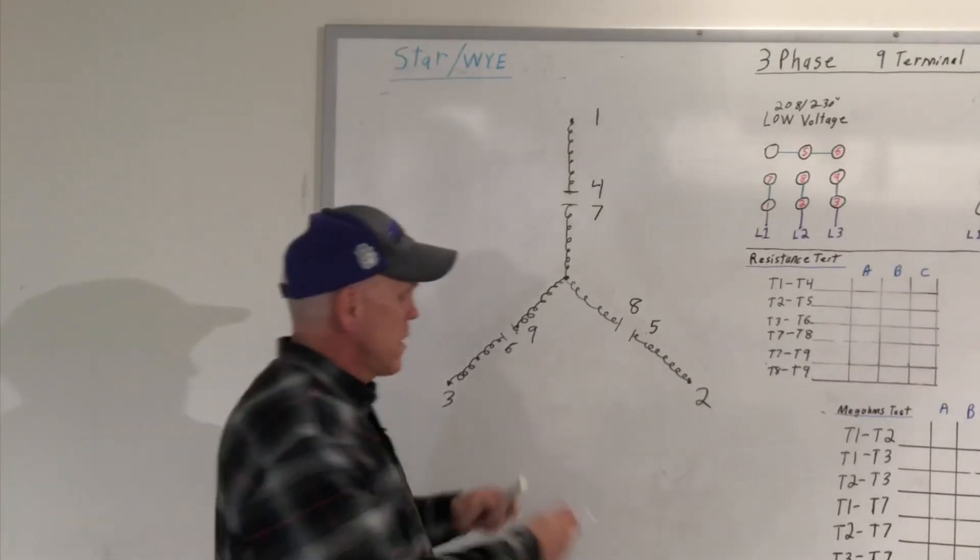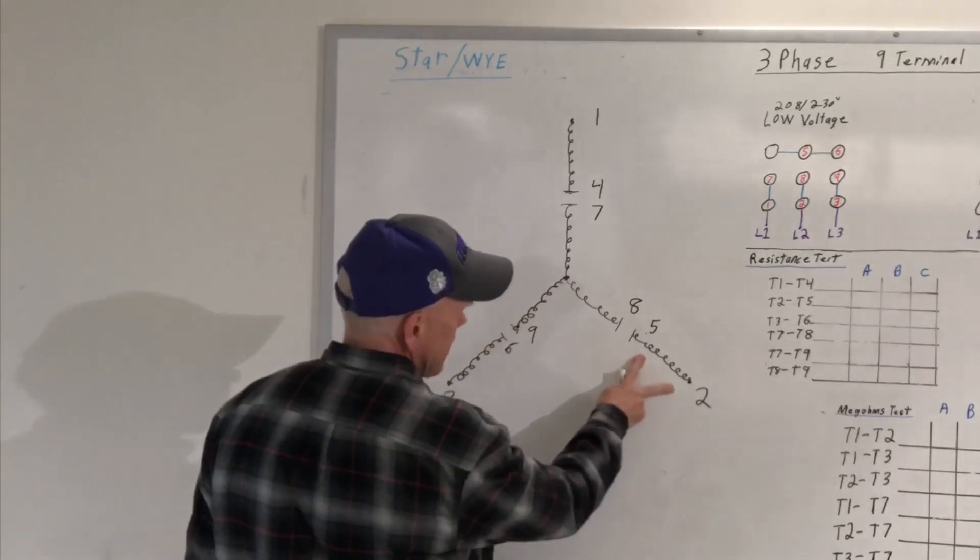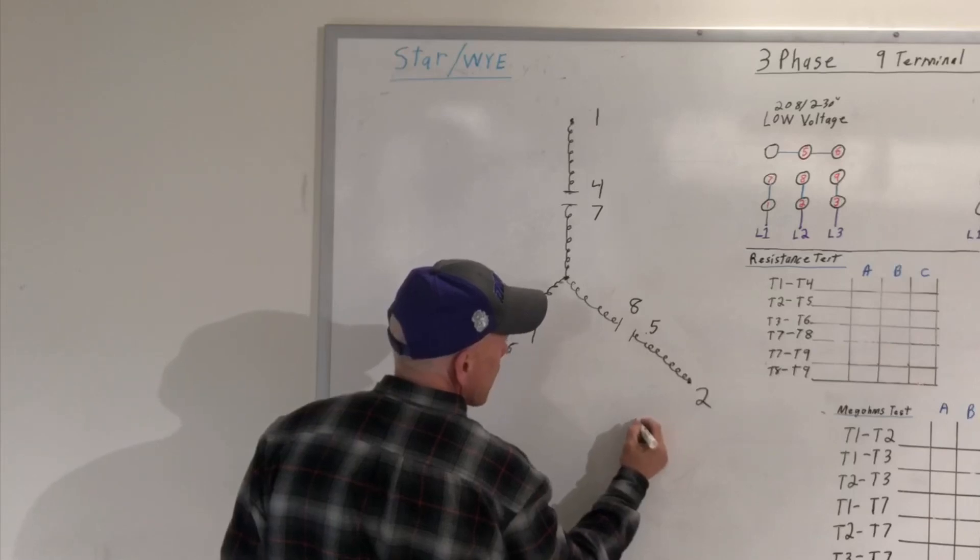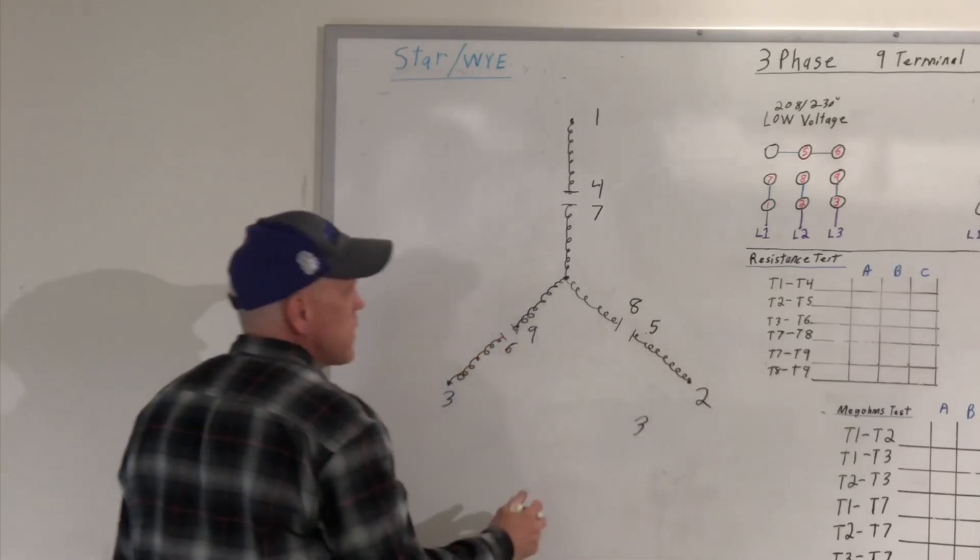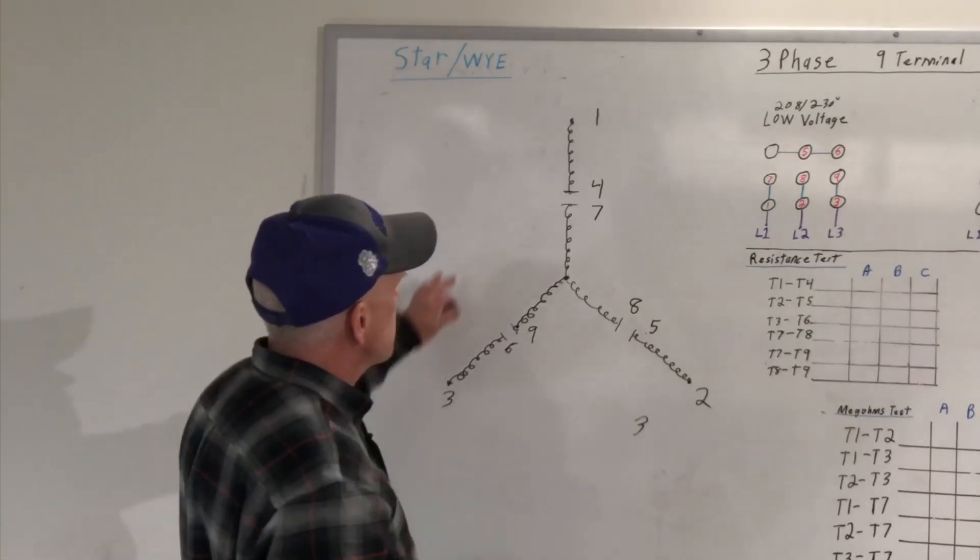When I go up and do an ohm test, let's say for, let's just say that this set of windings is between two and five. Let's just say it may be a three. So I'm looking for a three here. I'm looking for a three here. At least close, within maybe 10% of each other.